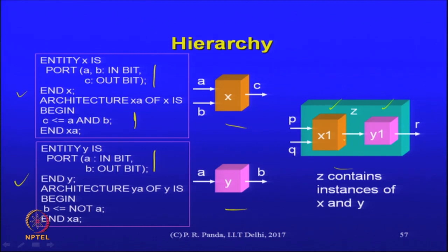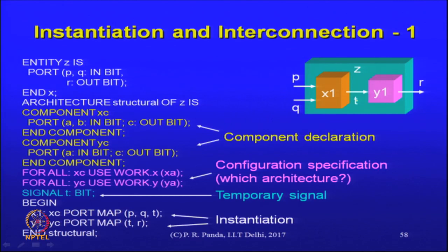We would like to create a larger module Z that consists of one instance of X, one instance of Y, and they are connected in the way that we have specified. This module Z has ports P, Q and R; P and Q are inputs, both of which are connected to the respective inputs of X1, and R is connected to the output of Y1. This is the sample VHDL that achieves this instantiation and connection — it seems a little verbose, but there is not really that much in there.